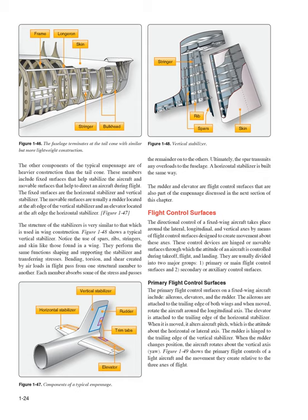The structure of the stabilizers is very similar to that which is used in wing construction — notice the use of spars, ribs, stringers, and skin like those found in a wing. They perform the same functions: shaping and supporting the stabilizer and transferring stresses. Bending, torsion, and shear created by air loads in flight pass from one structural member to another. Each member absorbs some of the stress and passes the remainder on to the others. Ultimately, the spar transmits any overloads to the fuselage. A horizontal stabilizer is built the same way. The rudder and elevator are flight control surfaces that are also part of the empennage.